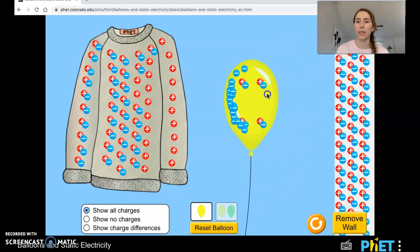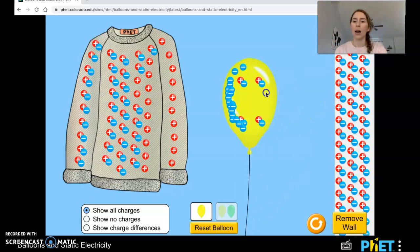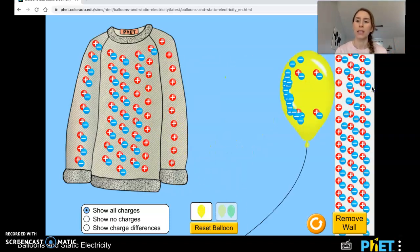The wall, if I move the balloon away, you can see all of the wall is neutrally charged. Every positive is balanced out by a negative. What's happening when I put the balloon in the vicinity of the wall?